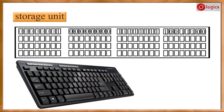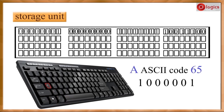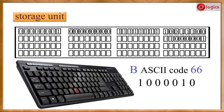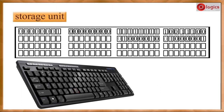Now let us understand how alphabets are stored inside the computer. Each letter on the keyboard has its ASCII code. The letter 'A' ASCII code is sixty-five. When you convert the number sixty-five into binary format, you get 01000001. This binary number occupies one byte in memory. Similarly, the ASCII code for 'B' is sixty-six. When you convert this into binary format, you get 01000010. One byte is required to store it.